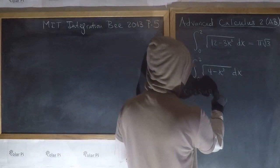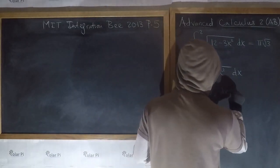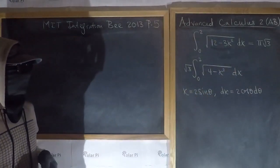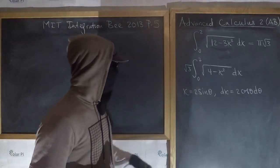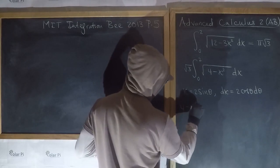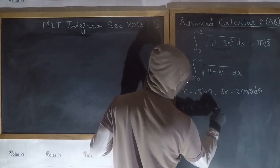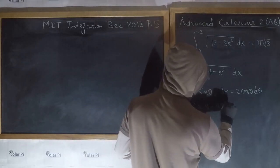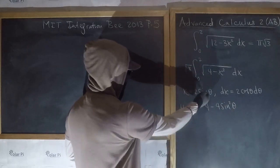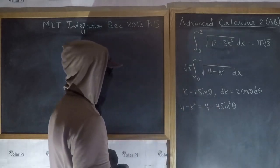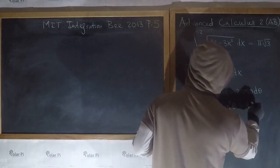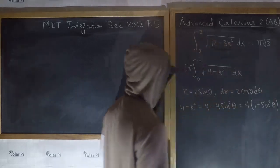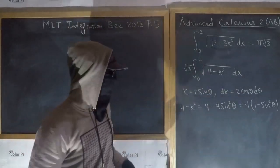For x equals two sine theta, dx equals two cosine theta d theta. Then four minus x squared equals four minus four sine squared theta, which we factor as four times one minus sine squared theta. Now you see why the substitution with sine is helpful, because one minus sine squared theta is cosine squared theta.